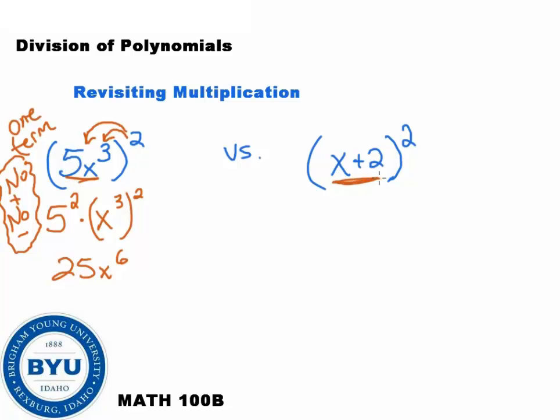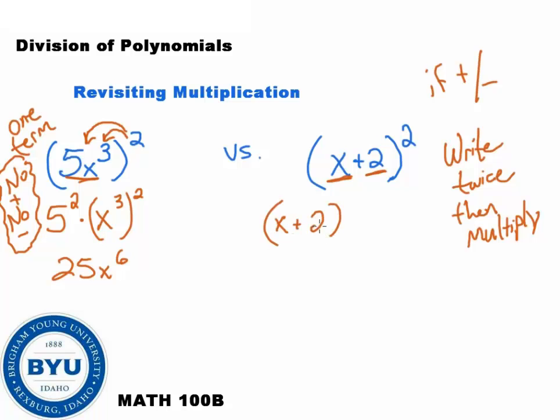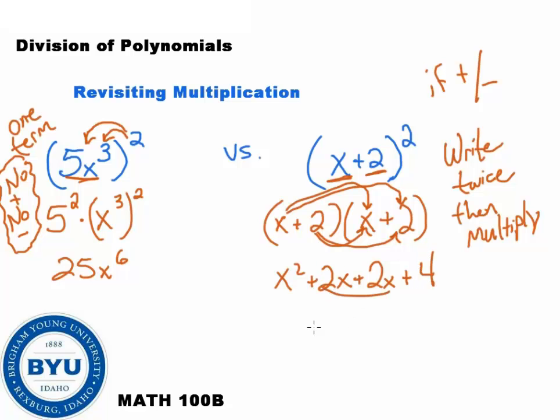Now on a problem like this, when you have addition or subtraction inside, this is multiple terms. In fact, this has two terms. x is a term and 2 is a term. So when you have addition inside or subtraction, you have to write twice, then multiply. So if you have an addition or subtraction sign, you write it twice, then multiply. So here I have x plus 2 squared. To do this problem, I have to write it twice. x plus 2 times x plus 2. And then we can use super distribution to multiply these out. I get x times x, which is x squared. x times 2, which is 2x. 2 times x, which is 2x. And 2 times 2, which is 4. So we combine the like terms. We get x squared plus 4x plus 4.